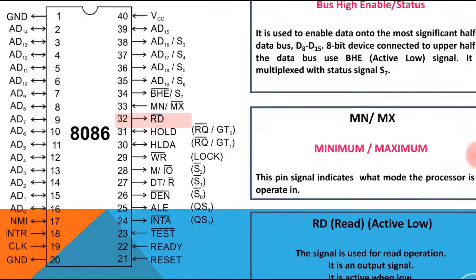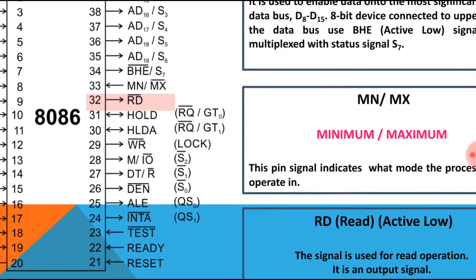Pin 28 is M/IO (Memory or I/O). If pin 28 is logic low, the processor is performing an operation with I/O devices; if high, with memory. Pin 27 is DT/R (Data Transmit or Receive), indicating direction. If logic level is zero, the processor is receiving information from an external device or memory; if logic level is one, the processor is transmitting to memory or I/O devices.